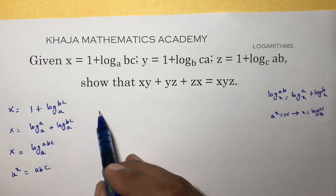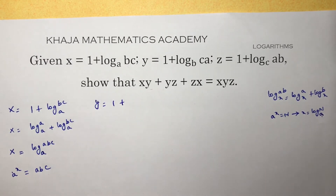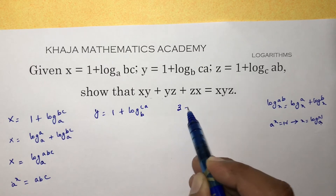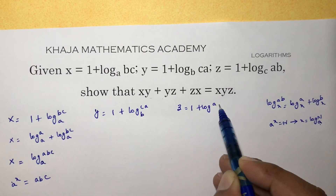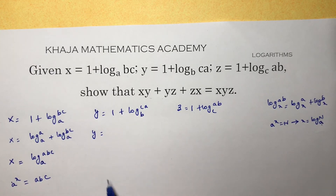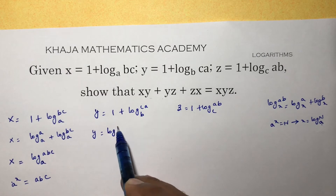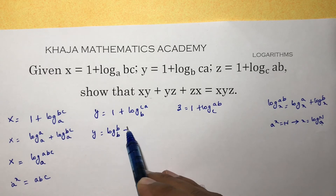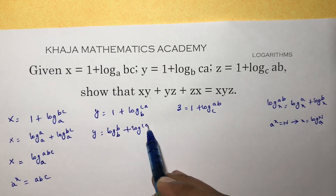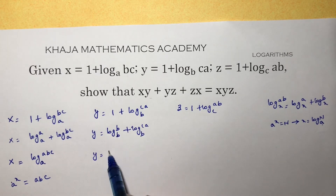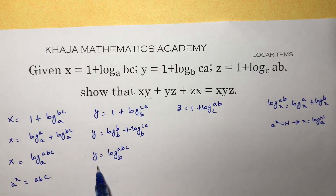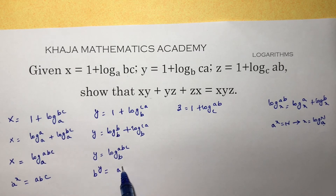In the same way for the second part, y equals 1 plus log CA to the base B. In place of 1, write log B to the base B, because log B to the base B equals 1. So y equals log B to the base B plus log CA to the base B. Applying the logarithm of a product gives log BCA, which is log ABC to the base B. In exponential form: B^y equals ABC.